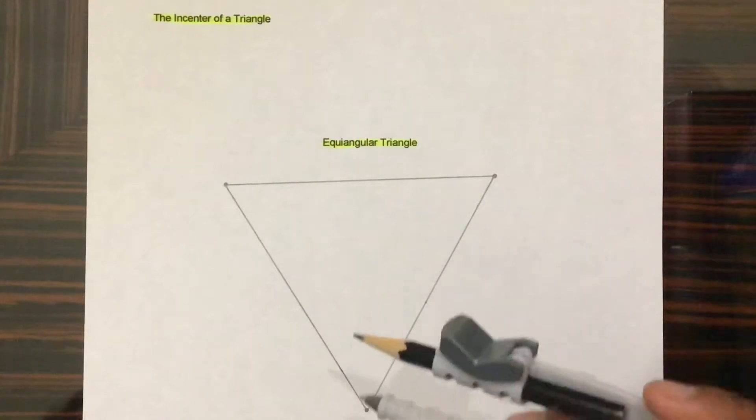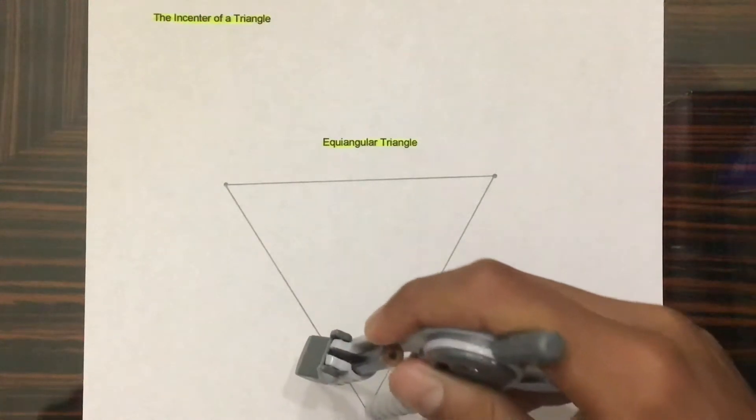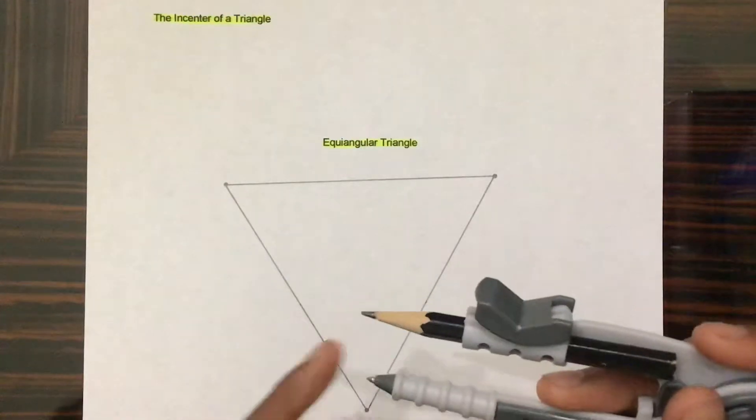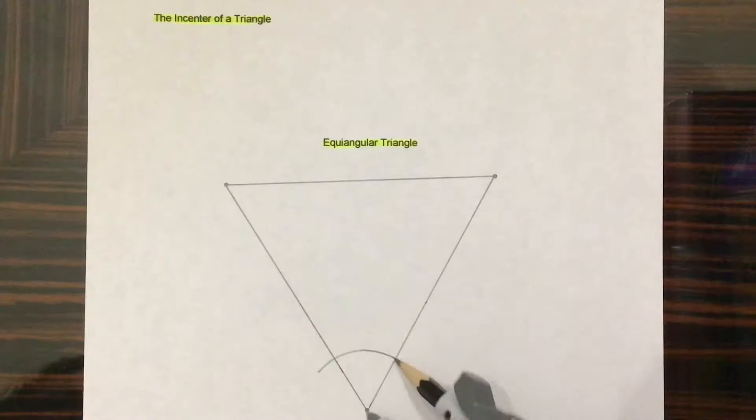So to find the bisector of this vertex, put your compass needle on this vertex and draw a nice arc.